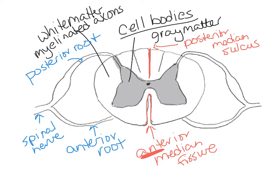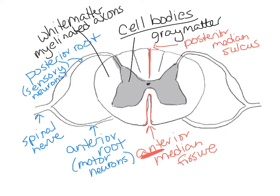Functionally, the anterior root and the posterior root carry very different neurons. The posterior root carries sensory neurons only, and the anterior root carries motor neurons only. By the time we get to the spinal nerve it carries both, so we say the spinal nerve is mixed because it carries both sensory and motor neurons.